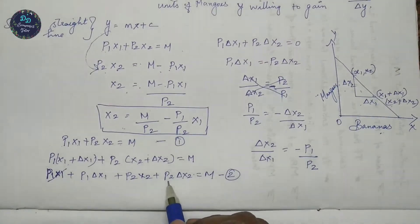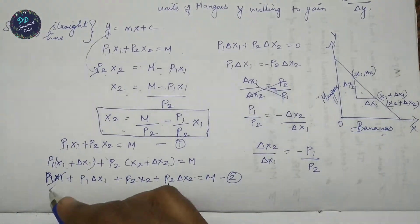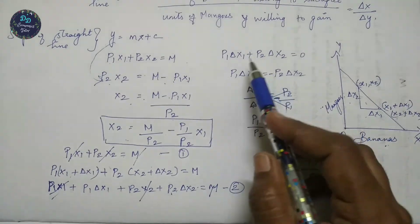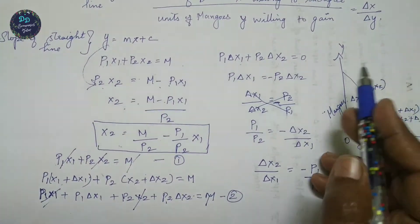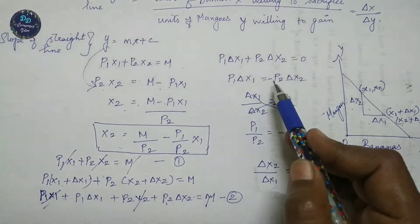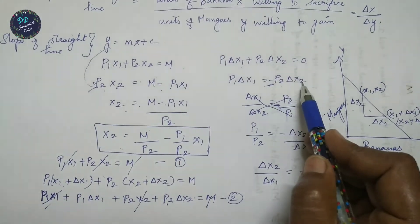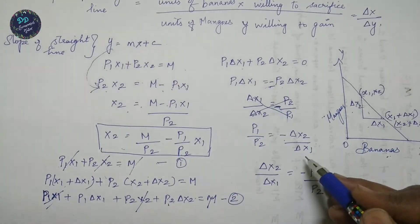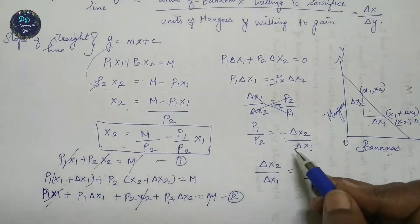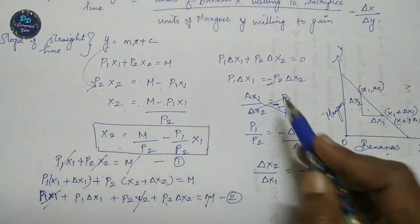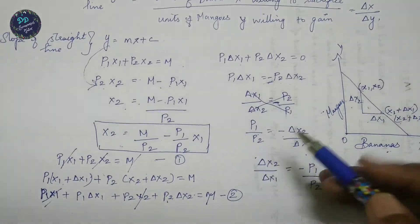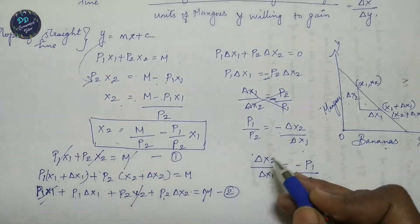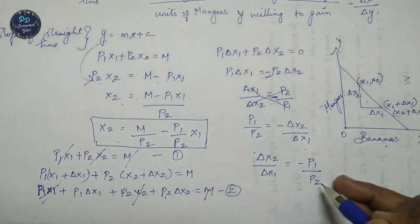Subtracting the first equation from the second, p1·Δx1 + p2·Δx2 = 0. Rearranging, p1·Δx1 = −p2·Δx2. Dividing both sides gives p1/p2 = −Δx2/Δx1, or equivalently Δx2/Δx1 = −p1/p2. This is the slope of the budget line.